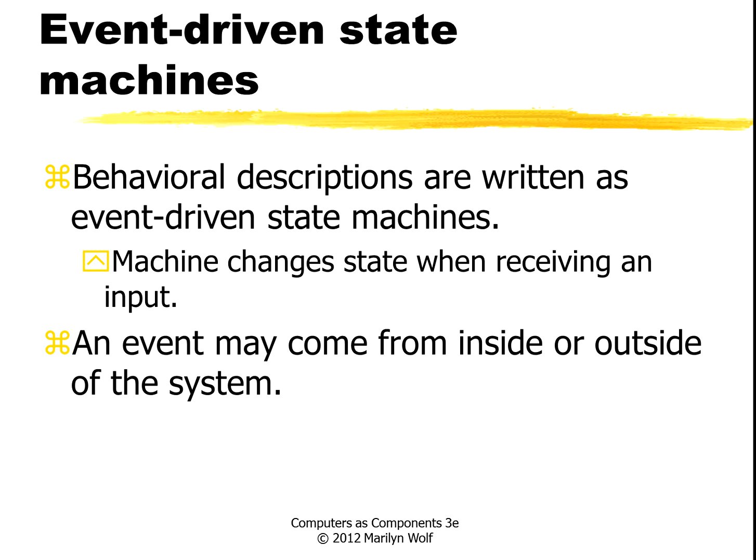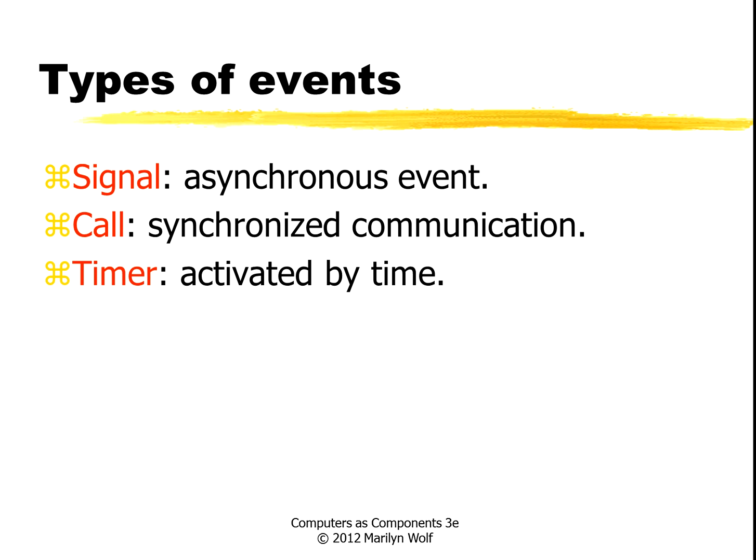So these state machines are event driven, they're not like hardware state machines where you have a clock that evaluates the state on every clock cycle. These are behavioral descriptions. So an event is a change in something, an external input changes or perhaps another object sends you an event. When you get an event that you're interested in, that the machine is defined to look at, then the machine evaluates its state and decides what transition to take to go to the next state.